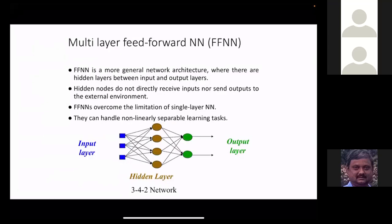A network has two things: the network structure — how many nodes, how many layers — and a set of associated weights, which we call the parameters. We've established that the structure is sufficient, but now the question is: what exact weight values give the best approximation? This is an optimization problem: among all possible weight combinations, find the one that gives minimum prediction error.